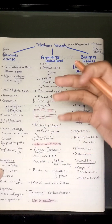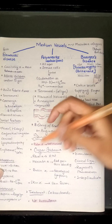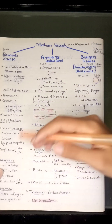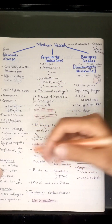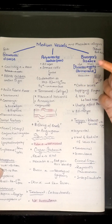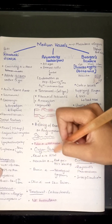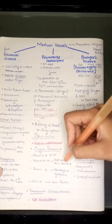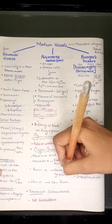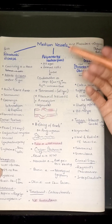The aneurysms in PAN decrease blood supply to organs, leading to organ ischemia. If the renal artery is affected, it leads to hypertension. If the mesenteric artery is affected, it causes abdominal pain and GI bleeding. Involvement of brain arteries leads to neurological symptoms, and skin artery involvement leads to skin lesions. The treatment is corticosteroids, and there is no granuloma formation in PAN.